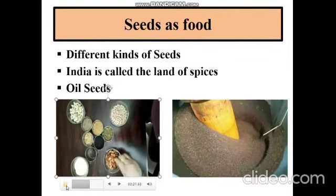So dear students, this is mustard. We also call it rai in Hindi. And there are some seeds like mustard, groundnut, and coconut which give us oil. So students, I will show you how oil is made from mustard in the mill.